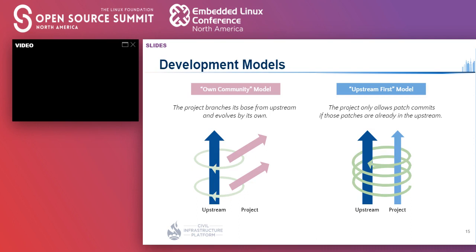Here I show two development models. The left-hand side shows the own community model. The project with this model branches its code from upstream and evolves by itself. This model enables the project to ramp up quickly, but in the long run it will be difficult to backport upstream patches due to conflicts. The right-hand side shows the upstream-first model. The project allows patch commits only if those patches are already in the upstream. It may take time to introduce a desired patch because the target patch should be accepted by upstream first, but it enables the project to share its outputs with the upstream and eliminates the risk of conflicts.